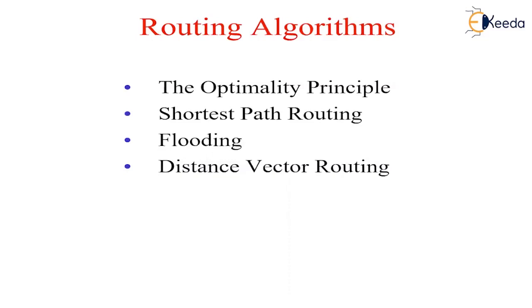If the subnet uses datagrams internally, this decision must be made for every arriving data packet since the best route may have changed since last time. If the subnet uses virtual circuits internally, routing decisions are made only when a new virtual circuit is being set up. Therefore, data packets just follow the previously established route. This is sometimes called session routing because a route remains in force for an entire user session.